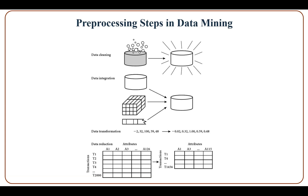Data Reduction techniques include data aggregation, attribute subset selection, dimensionality reduction, numerosity reduction, and discretization. Data Reduction is used to obtain a reduced representation of data, improve the performance of algorithms, and note that the categories are not mutually exclusive.